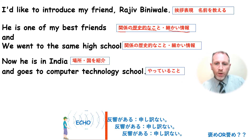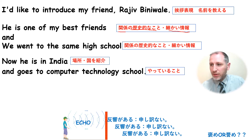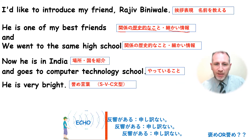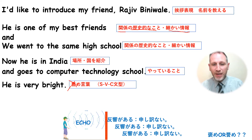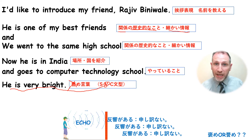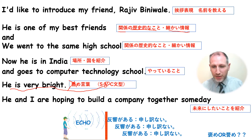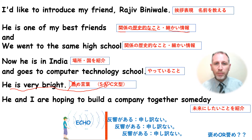'He goes to computer technology school.' That tells us what the person is doing now. Then there is 'homei kotoba' — praise or complementary words — usually in the SVC sentence pattern with a be-verb in the present tense. 'He and I are hoping to build a company together someday.' That finally is talking about something you or your friend wants to do in the future. That's one type of friend introduction.